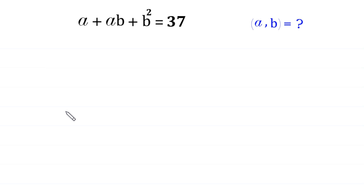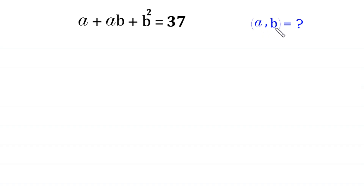Hello, welcome to how to solve this very nice Diophantine equation: a plus ab plus b squared is equal to 37. We need to find all possible values of a and b.